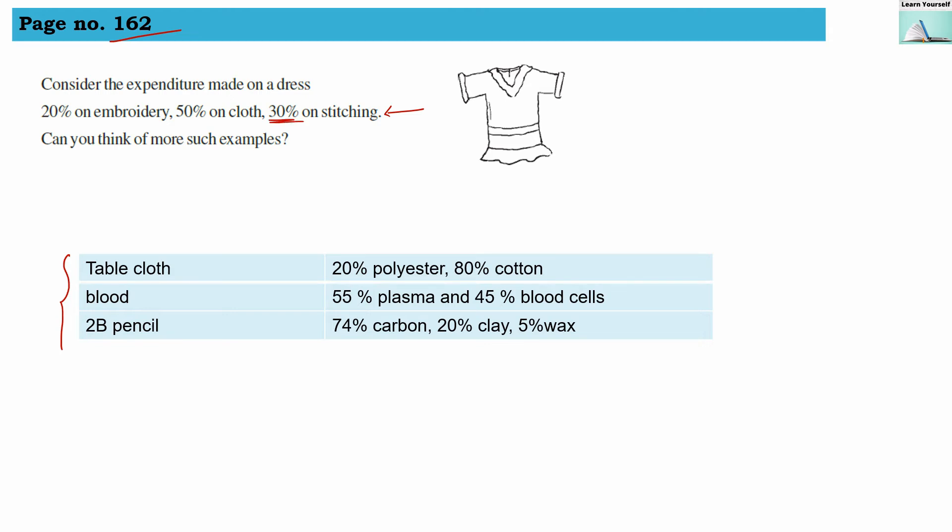So table cloth is made up of 20% polyester and 80% cotton. Our blood is made up of 55% plasma and 45% blood cells.